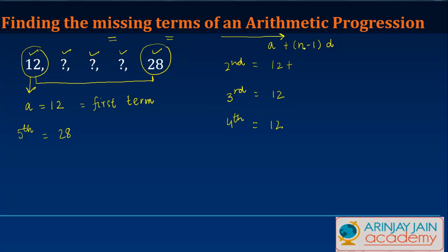Plus n minus one. Now what is n? n refers to the number of term. So if this is equal to two minus one, if it is the third term instead of n we put in three minus one. For the fourth term we put in four minus one. But what we don't know is the value of this difference.